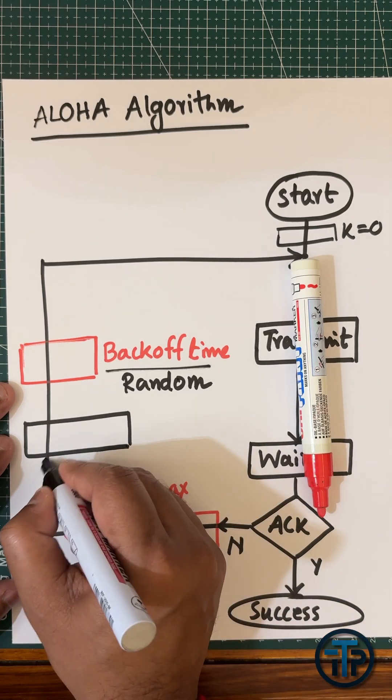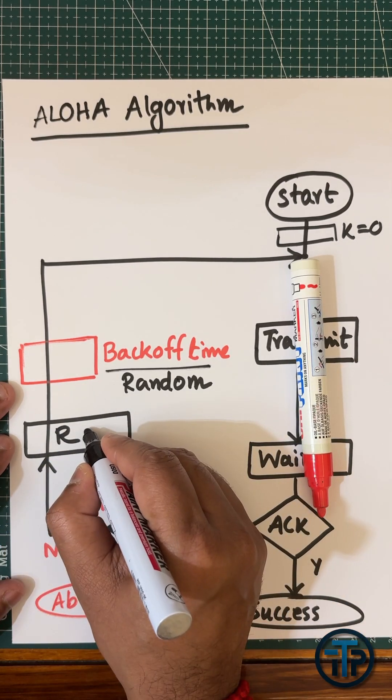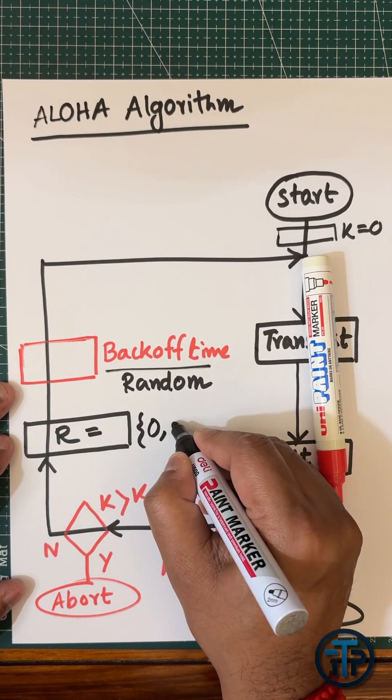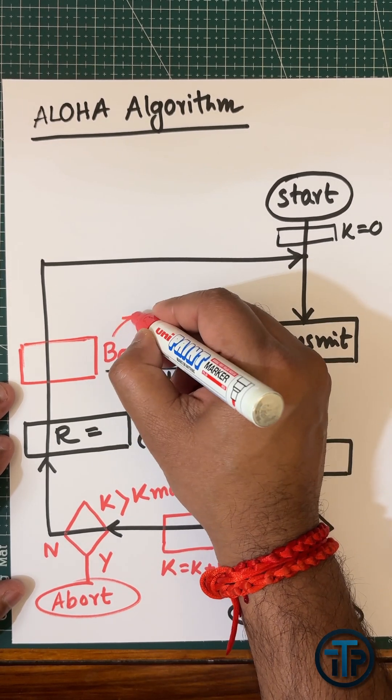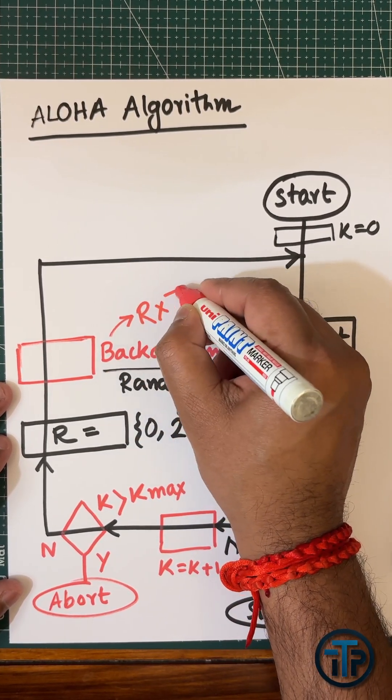For example, we can say that random number R is in the range 0 to 2^K - 1. The backoff time will be R × Tp, where Tp